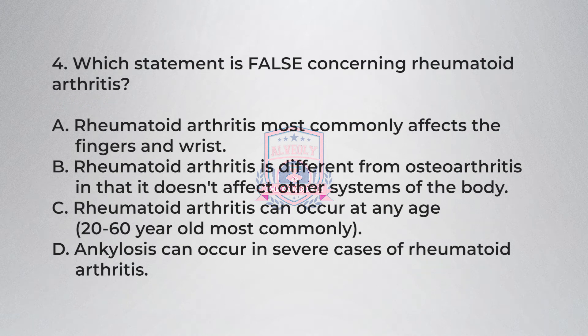Question four: Which statement is false concerning rheumatoid arthritis? A) Rheumatoid arthritis most commonly affects the fingers and wrist. B) Rheumatoid arthritis is different from osteoarthritis in that it doesn't affect other systems of the body. C) Rheumatoid arthritis can occur at any age, 20 to 60 year-olds most commonly. D) Ankylosis can occur in severe cases of rheumatoid arthritis.